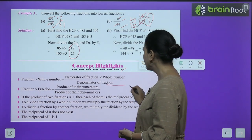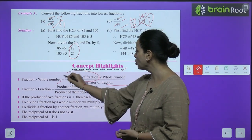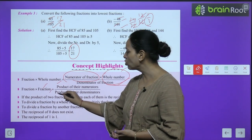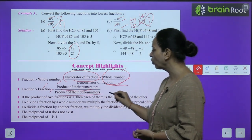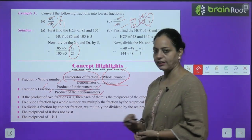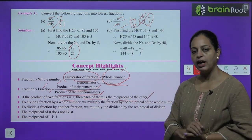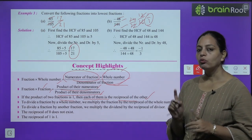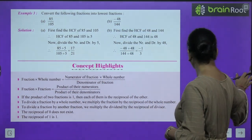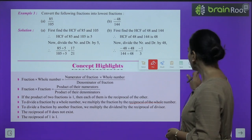Concept highlights: fraction × whole number = (numerator × whole number) / denominator. Fraction × fraction = product of numerators / product of denominators. If the product of two fractions is 1, then each is the reciprocal of the other. To divide a fraction by a whole number, multiply the fraction by the reciprocal of the whole number.